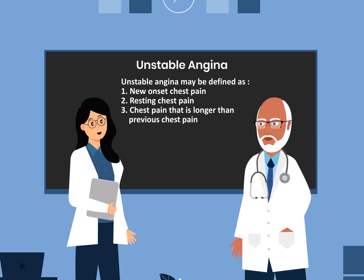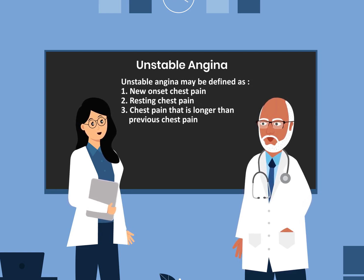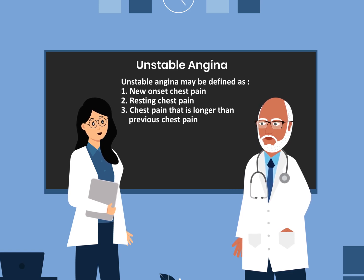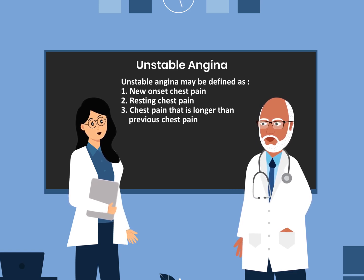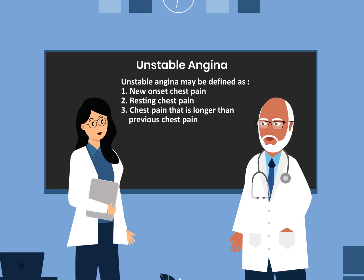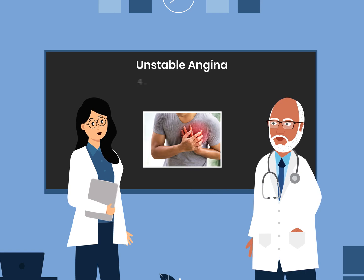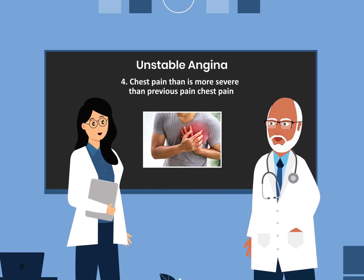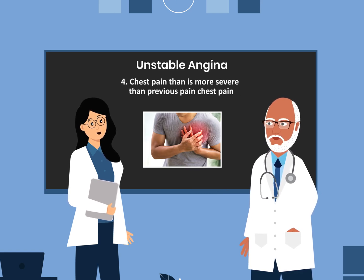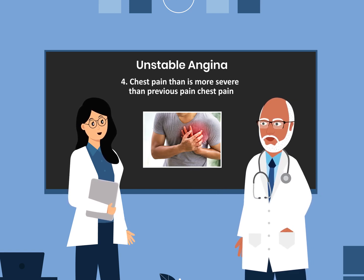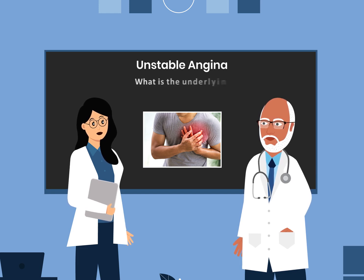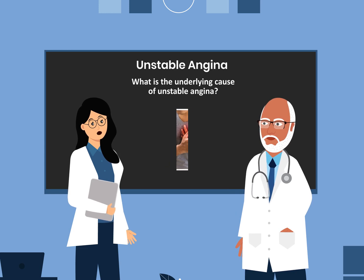Unstable angina may be defined as: 1. New onset chest pain. 2. Resting chest pain. 3. Chest pain that is longer than previous chest pain. 4. Chest pain that is more severe than previous chest pain.